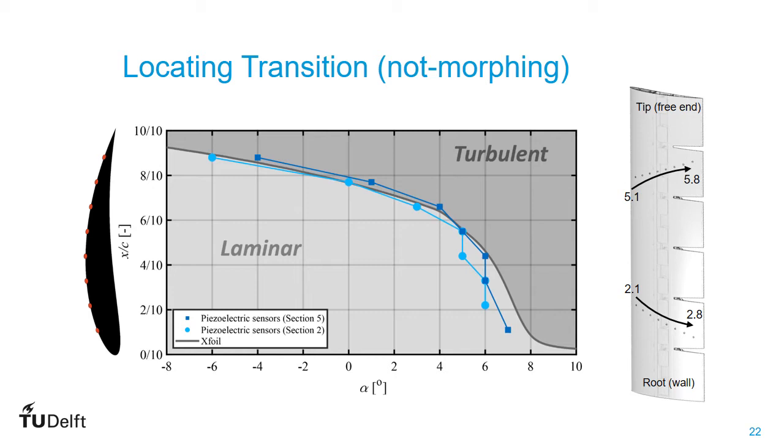The minor differences between the sensors of Section 2 and Section 5 could be due to the fact that Section 2 is closer to the root of the wing, which is near a wall, while Section 5 is closer to the tip of the wing, making up for 3D effect, aerodynamically speaking.